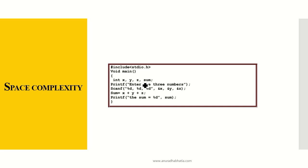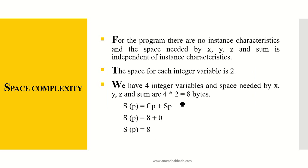Let's take an example. In a void main function, we have four variables: int x, y, z, and sum. The user enters three numbers, sum equals x plus y plus z, and we print the sum. For this program, there are no instance characteristics and the space needed by x, y, z, and sum is independent of instance characteristics. The space for each integer variable is 2 bytes.